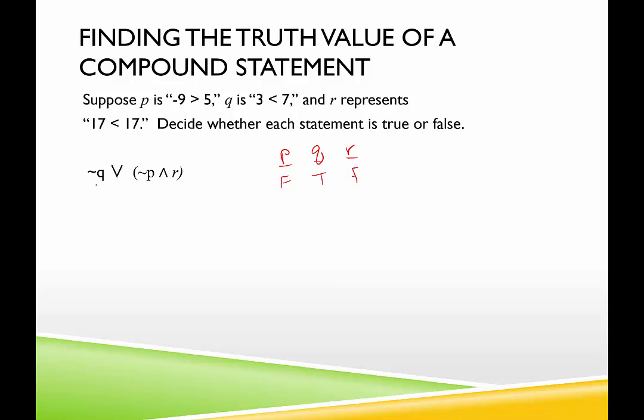Not Q, so not Q is false because Q is true, or, and then what do we have here? Not P is true, and R is false. This is a conjunction. The conjunction needs both parts to be true. So this would be a false conjunction. So we have false or false. Oh dear. So this particular example leads us to a false. This is a false statement.